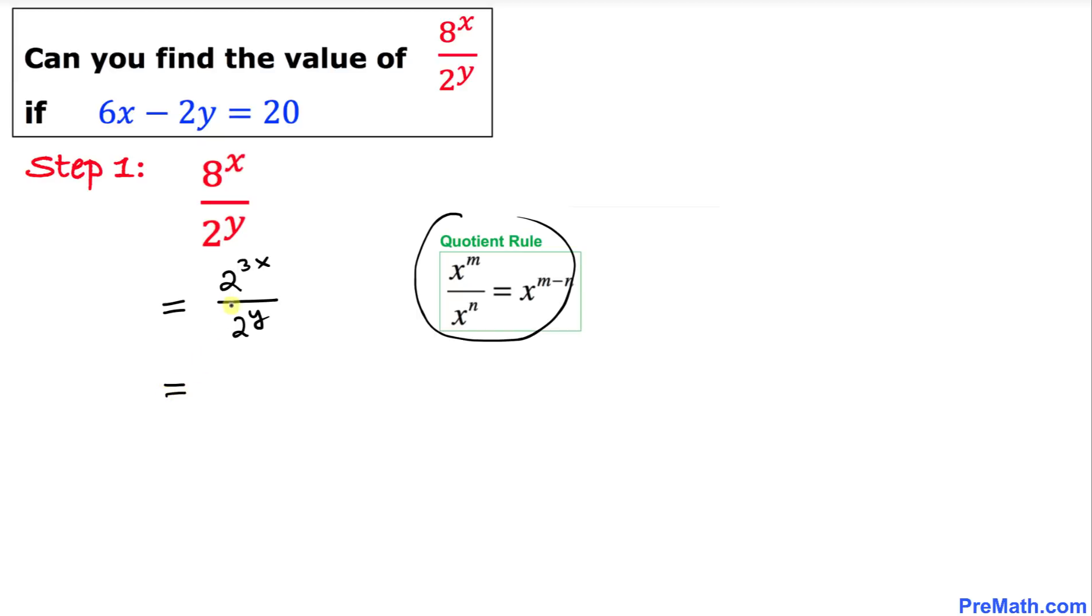That means I could write this fraction as 2^(3x-y). Thus, we can write 8^x divided by 2^y equals 2^(3x-y), and I'm going to call this equation 1.